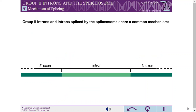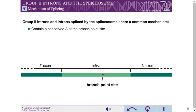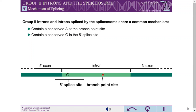Both group 2 self-splicing introns and introns spliced by the spliceosome contain an adenine at a site within the intron called the branch-point site. These introns also contain a conserved guanine at the 5' end of the intron in a region called the 5' splice site, and another conserved guanine at the 3' end of the intron in a region called the 3' splice site.